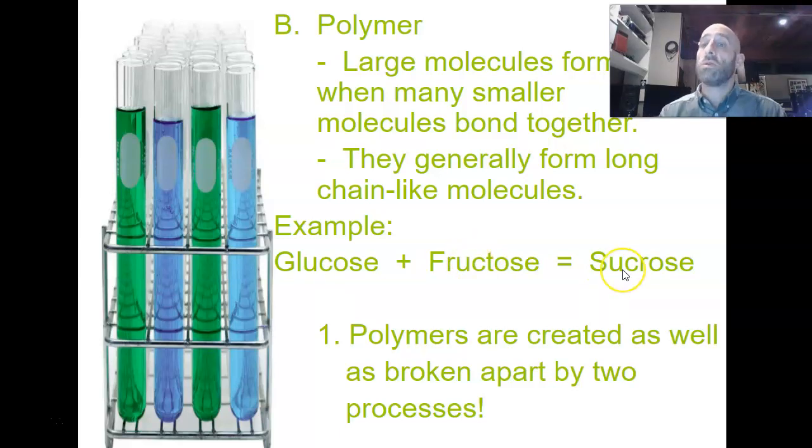And then sucrose is the stuff that you put on your food. So if you have sugar in your house, if you want to bake or make cookies or put sugar on your cereal, that is sucrose. So what happens is our body breaks down sucrose in order to digest it. We make polymers and we break them down by two processes that I'm going to talk about in the lecture today.